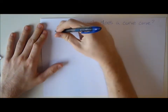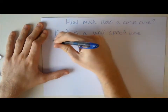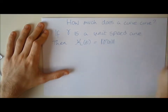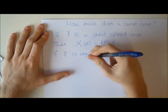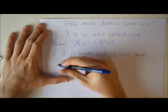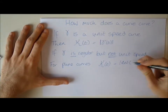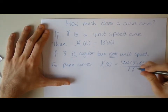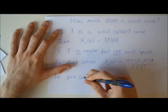The next question we're going to ask is: how much does a curve actually curve? If gamma is unit speed, then kappa(t) is the length of the second differential of gamma. If gamma is regular but not unit speed, then for plane curves kappa is the modulus of the determinant of the first differential of gamma and the second differential of gamma, divided by the length of gamma prime cubed. For space curves, kappa is the length of the cross product of gamma prime and gamma double prime, divided by the length of gamma prime cubed.